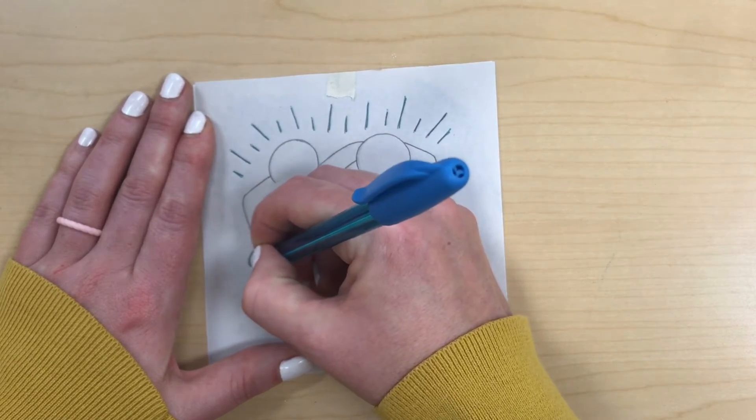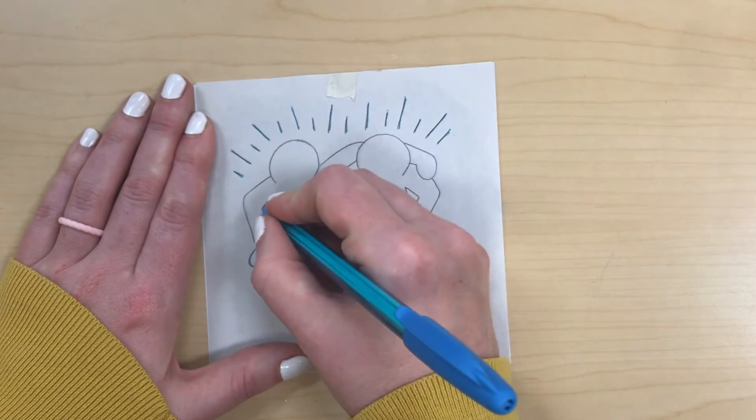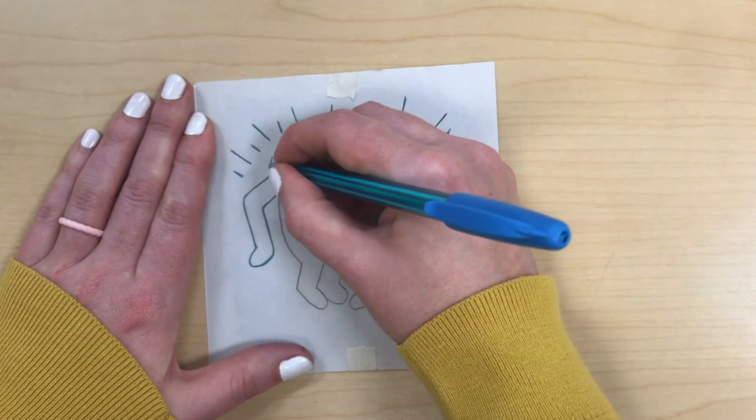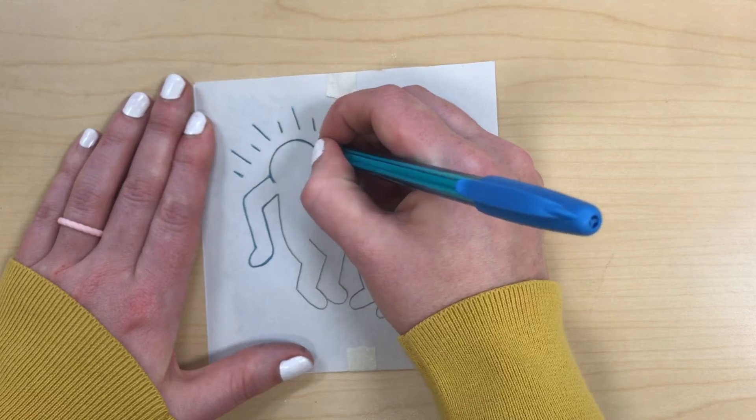Now if you have an area that has really straight lines like the lines of your center circle that come around, use a ruler during your transfer.